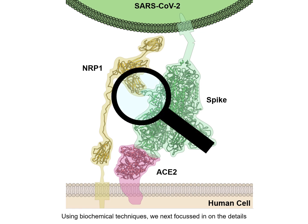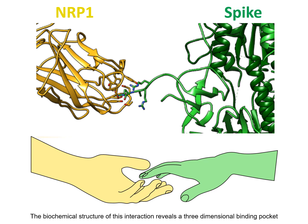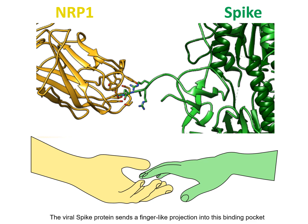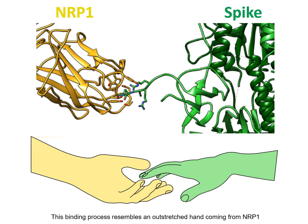Using biochemical techniques, we next focus in on the details of the interaction between spike and Neuropilin-1. The biochemical structure of this interaction reveals a three-dimensional binding pocket present on the surface of Neuropilin-1. The viral spike protein sends a finger-like projection into this binding pocket to engage the Neuropilin-1 receptor. This binding process resembles an outstretched hand coming from Neuropilin-1 that the spike protein grabs hold of in order to gain entry into human cells.